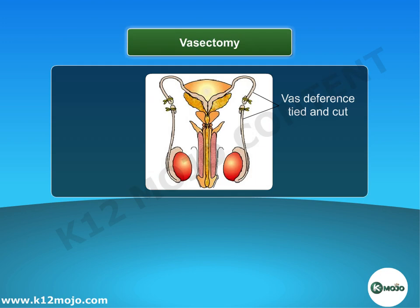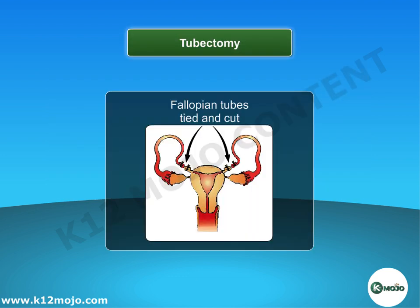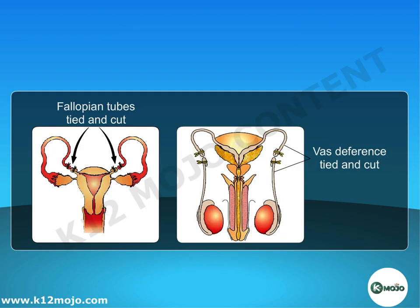Surgical method: In males, a small portion of the sperm duct is removed by operation. In females, a small portion of the oviduct is removed and both ends are tied. This prevents the ovum from entering the oviduct and the sperm from coming out. In males, this is known as vasectomy, and in females, it is known as tubectomy.